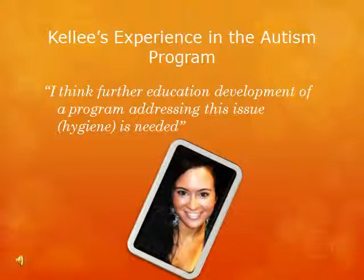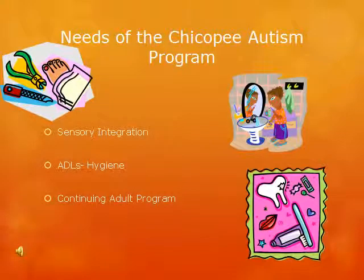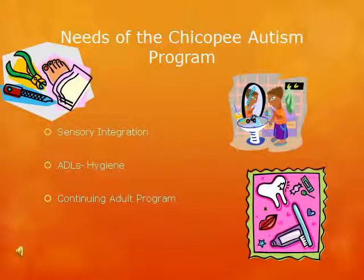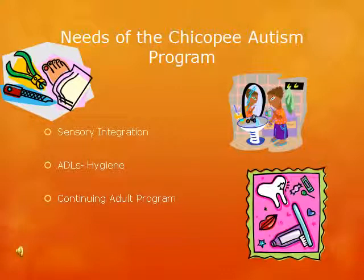I think further education and development of a program addressing this issue was needed. I am going to be talking about the needs at the Chicopee Autism Program, and we are going to focus on ADLs, including dressing — which covers wearing clean clothes that are appropriate and adjusting clothes properly — and the category of grooming, which includes obtaining and using the correct supplies, brushing their teeth, taking care of their hands and face, taking care of their nails and skin, and combing their hair. And the category of hygiene, which includes putting on deodorant, using shampoo and other hygiene supplies, and hand washing.